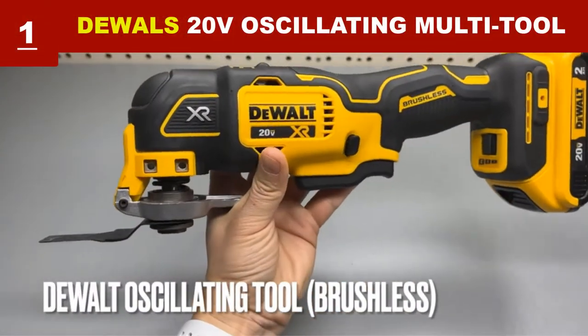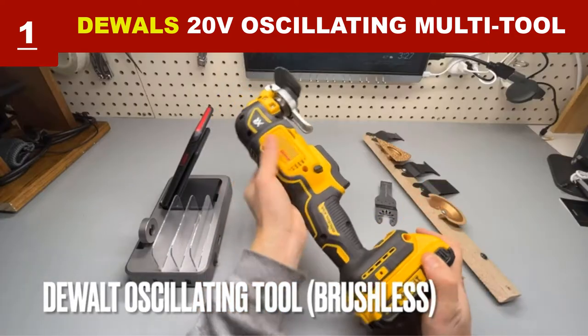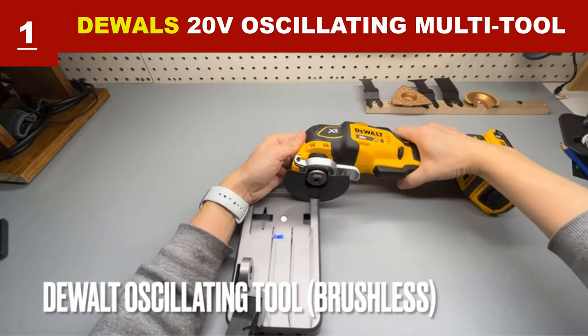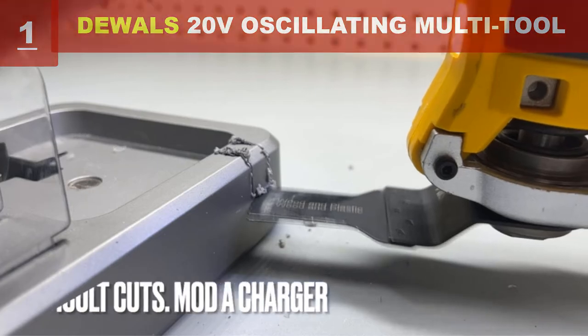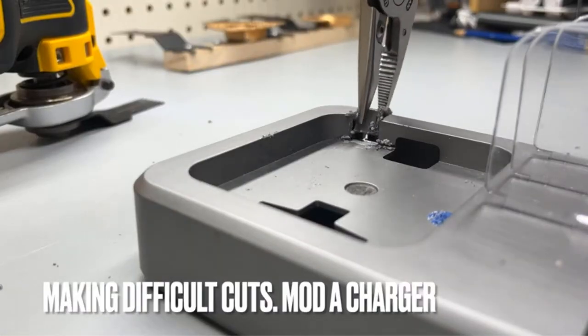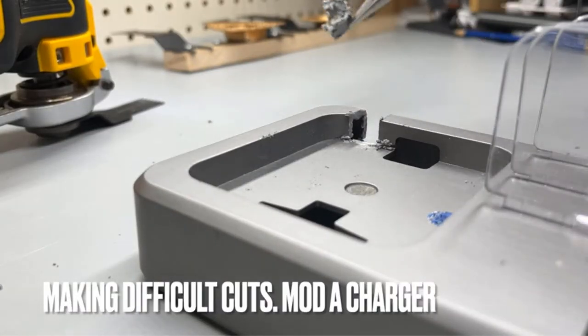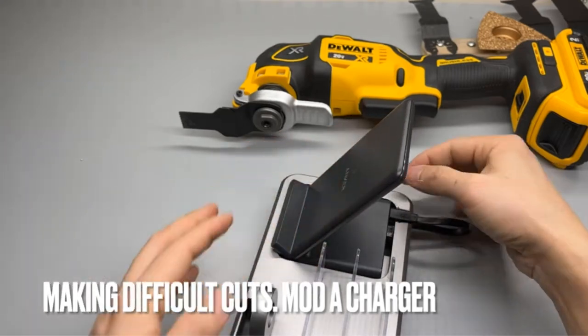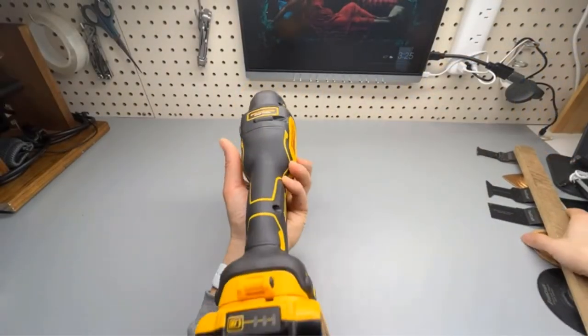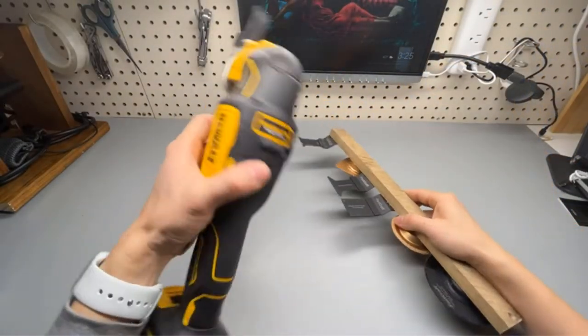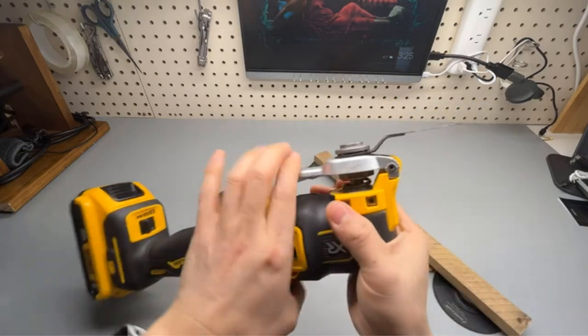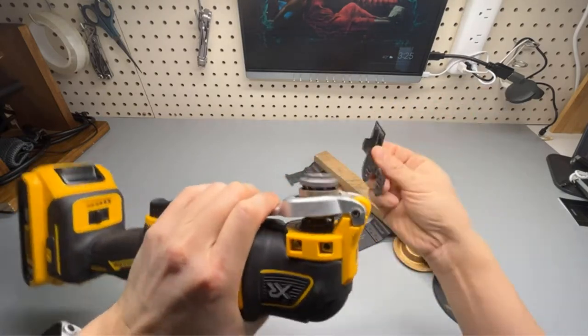This is the one we would like to recommend in the first position for many reasons. The DeWalt 20-volt oscillating multi-tool comes with many features. It has a 3-speed selector that allows you to choose the speed setting based on application. Its brushless motor delivers up to 57% more runtime.